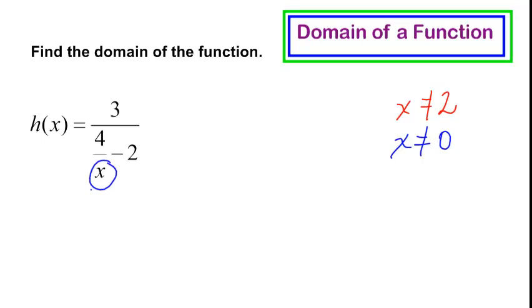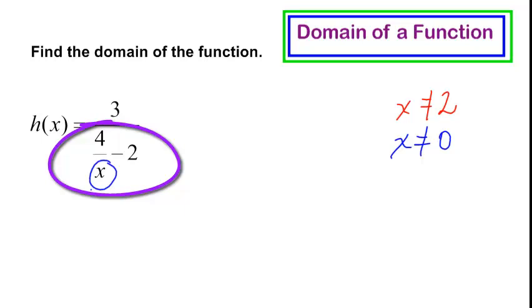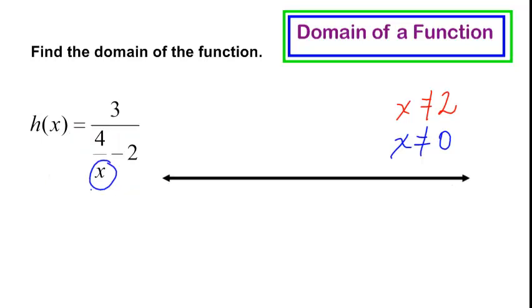Now, besides those two issues, x can equal anything else, but it can't equal zero, because that would make this denominator zero, and it can't equal 2, because if it is 2, then the bigger denominator will be zero. So how do I write the domain? Well, sometimes I like to graph it on a number line first, just to get a little visual there. So I'm going to put zero here, and I'll put 2.